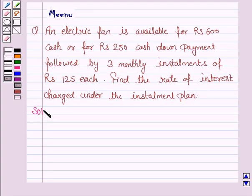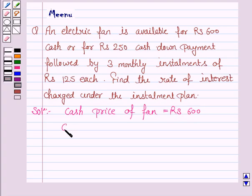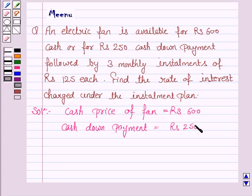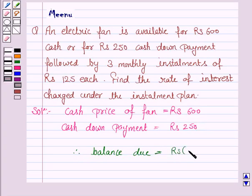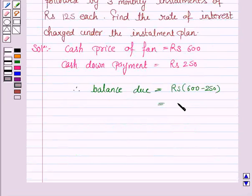Let's now move on to the solution. We are given that the cash price (CP) of the fan is Rs. 600, and the cash down payment is Rs. 250. Therefore, the balance due after paying Rs. 250 will be Rs. 600 minus Rs. 250, that is Rs. 350.